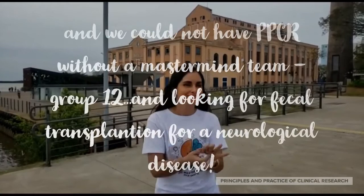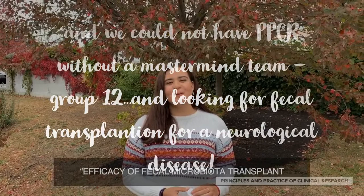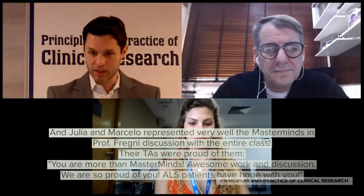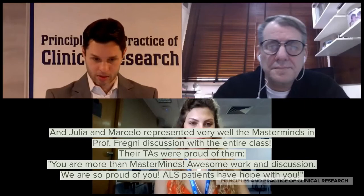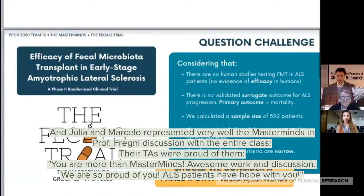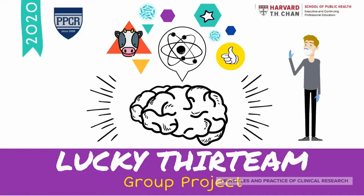Today we present our proposal titled: Efficacy of Fecal Microbiota Transplant in Early Stage Amyotrophic Lateral Sclerosis — a phase two randomized clinical trial. Let's start with group number 12, and I have Julia and Marcelo ready to interact with us. We are group 13 and we will briefly summarize our journey about our group project.